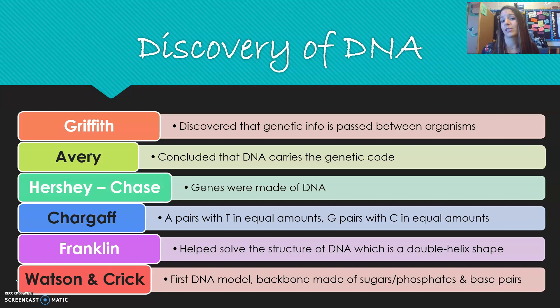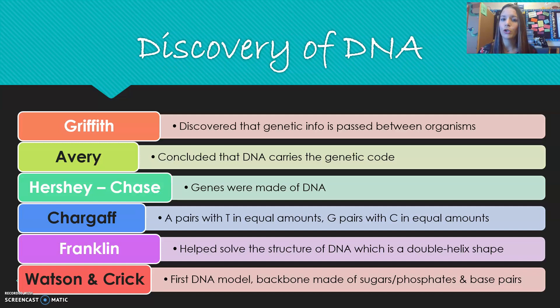So we started with just knowing there's some sort of genetic code, and now we know that DNA has that code. Hershey and Chase took it a step further, showing that genes are made of DNA — DNA is what makes the genes you inherit from your parents. Chargaff is really important in that he understood base pairing and that the bases pair in equal amounts: A and T, and G and C.